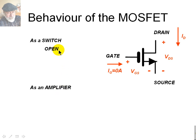As a switch, it is open or closed. When it's open, the drain current, the channel current is zero. It separates electrically the drain from the source. When it's closed, it behaves as a resistor RDS between the drain and the source.